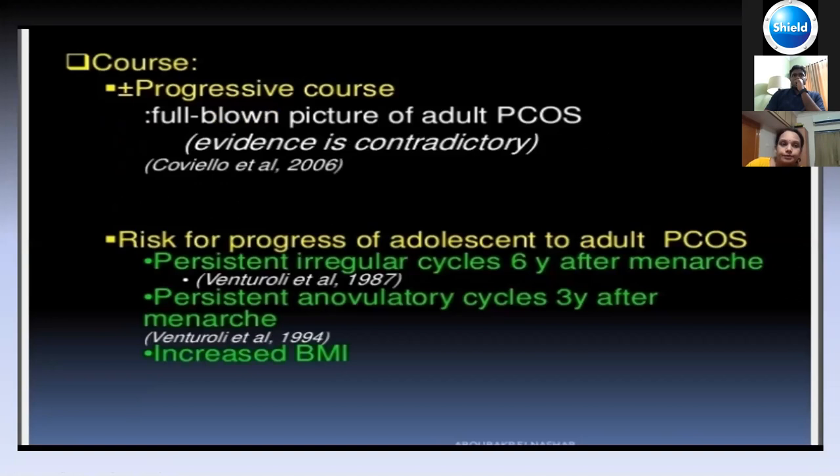Regarding the course of the disease — most cases of adolescent PCOS do progress into adult PCOS. It is progressive. Clinical features that hint at progression include persistently irregular cycles six to seven years after attaining menarche, persistently anovulatory cycles three years after menarche, and increased BMI.